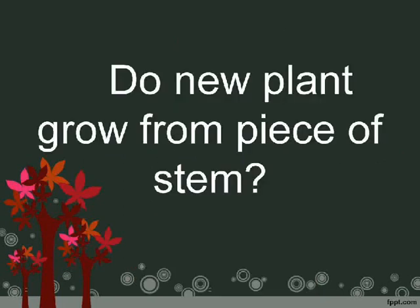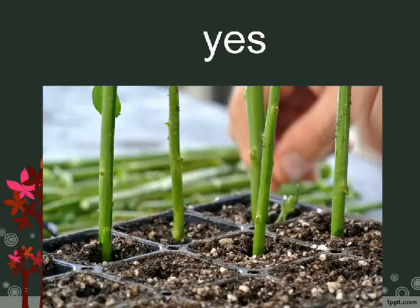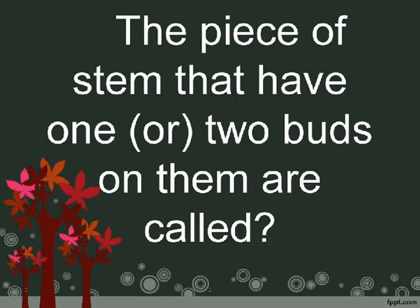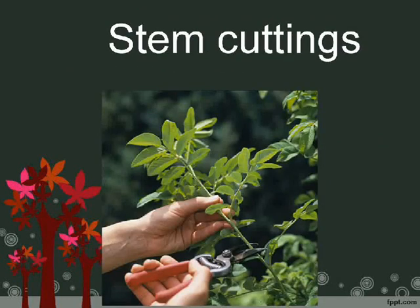Do new plants grow from a piece of stem? Yes. The pieces of stem that have one or two buds on them are called stem cuttings.